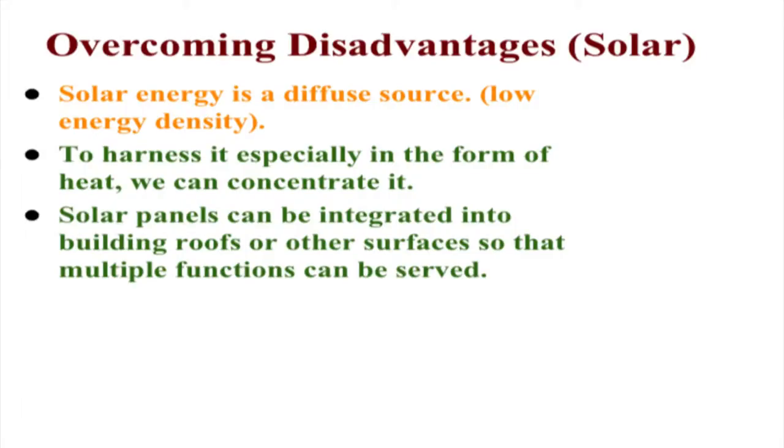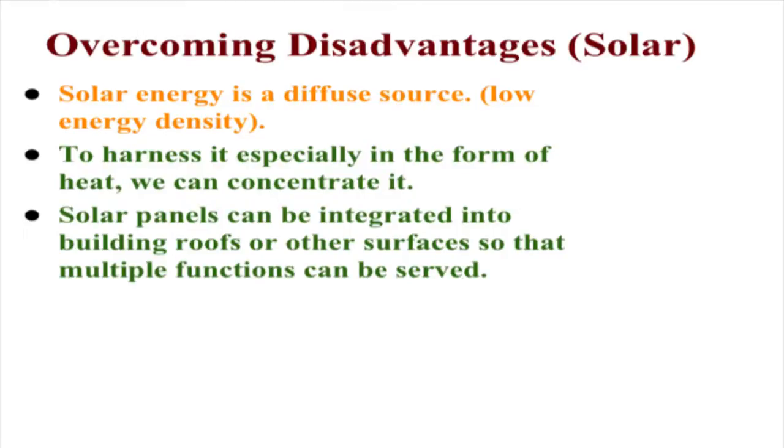Another issue related to solar energy is diffuseness — low energy density. Per unit area there is little solar energy available; you cannot power an entire home with a small solar panel. To address this diffuseness problem, you can concentrate solar energy using parabolic reflectors or Fresnel lenses to focus light on a relatively small area, achieving greater energy density. This has been used even for industrial steam production, and in multi-generation you can make steam for industrial processes, not only for domestic heating.